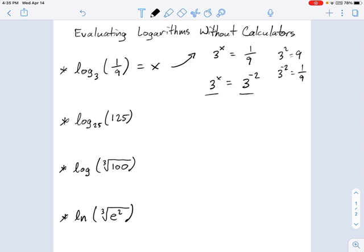And since the bases are equal, these threes, that means the exponents have to be equal also. It's the principle of exponential equality. So that means x equals negative two, which is the answer. This logarithm then evaluates to the following. Log base three of one ninth equals negative two.